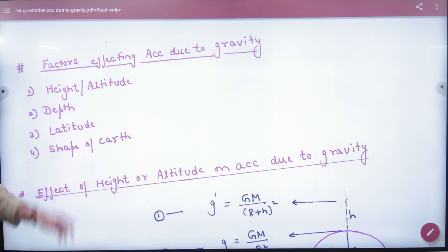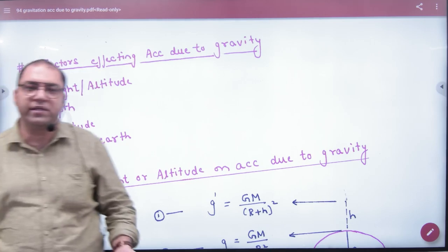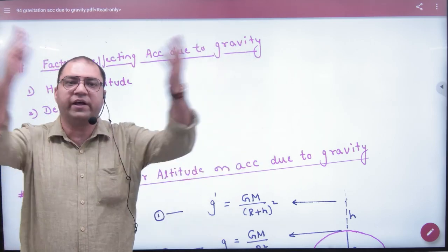The next is the shape of Earth. What is the problem in the shape of Earth? We learn that Earth is a goal, a sphere. No, Earth is not a sphere.